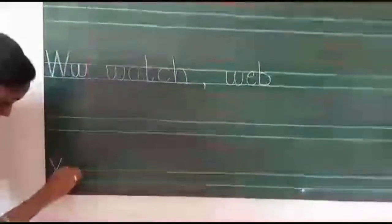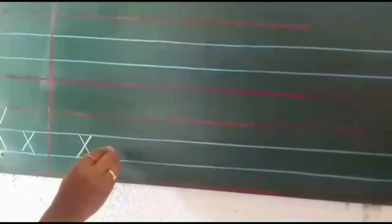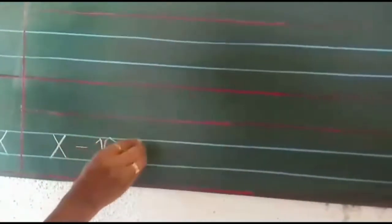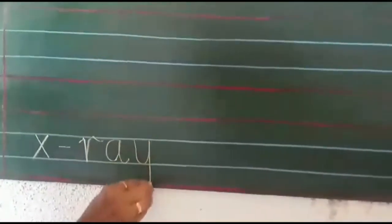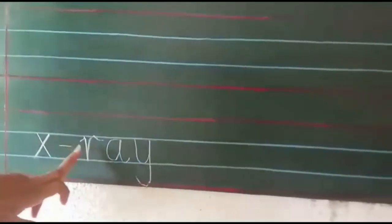Now, leave a line and then write X. Capital letter X, script letter X. X for Xmas tree, Xmas card, X-ray. So we will write the spelling of X-ray: X, then a small dash — sleeping line — then R, A, Y — X-ray. Okay. Children, you have to write like this: X, then small sleeping line, R, A, Y — X-ray.